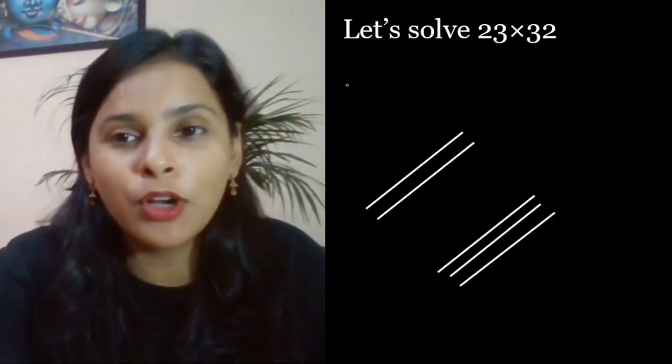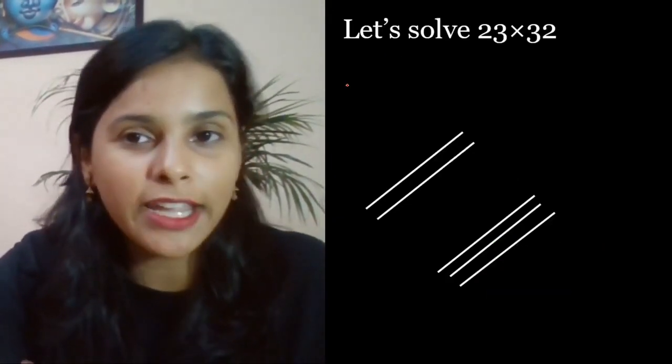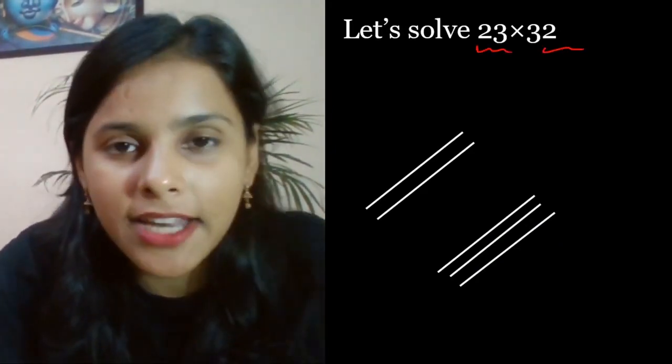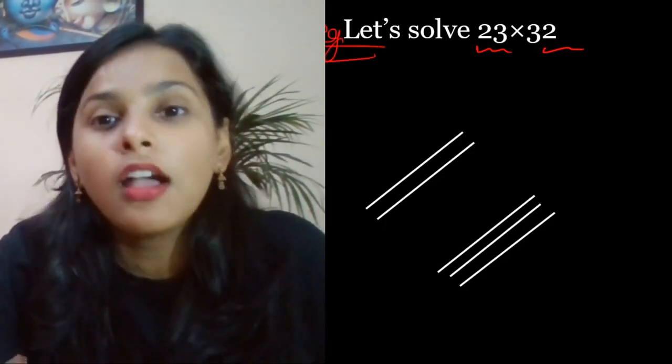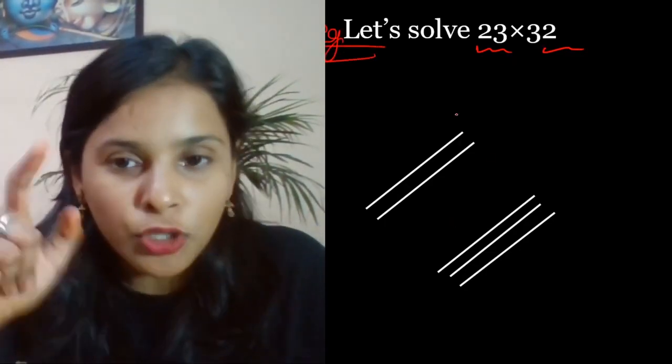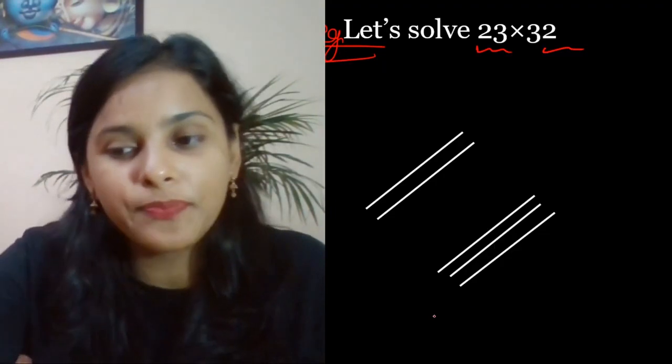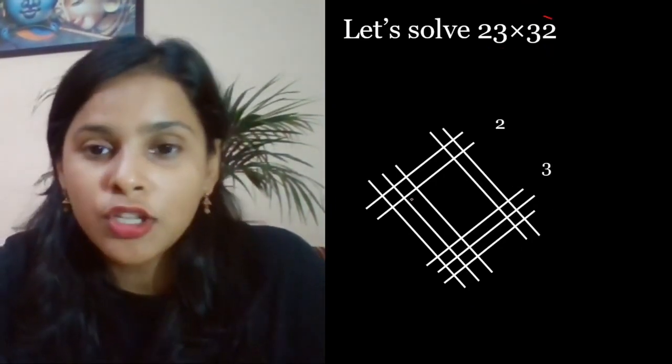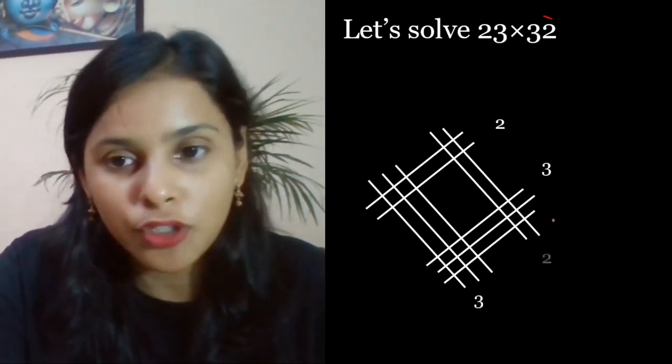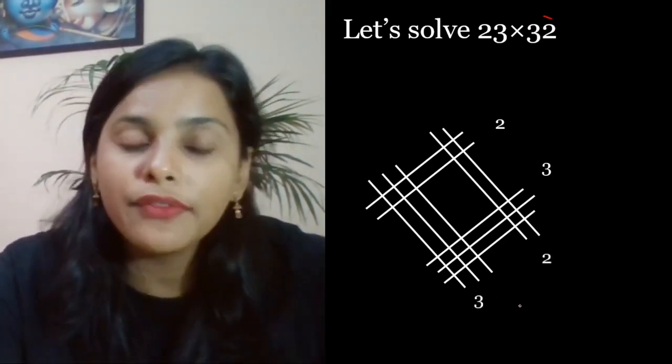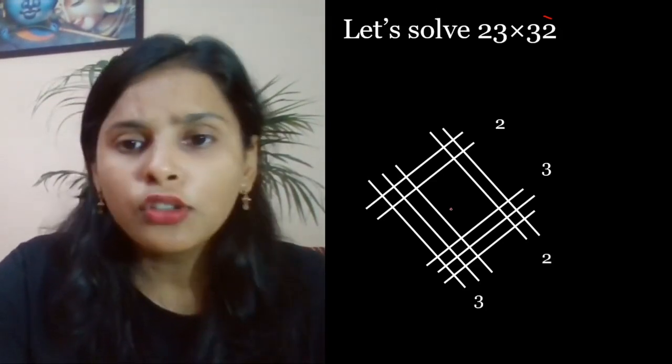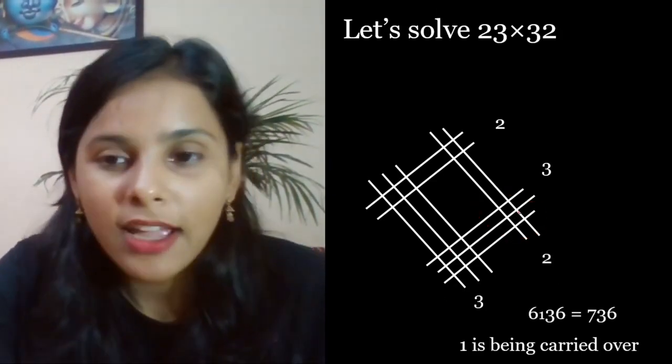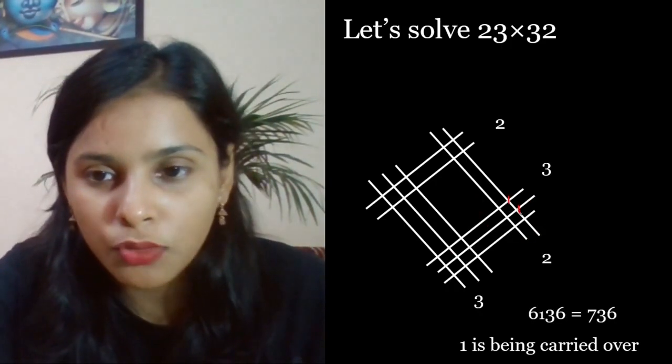One more example, 23 into 32. How to do this? 2, 3 is the digit, so 2 lines, 3 lines done. Then we have 3 and 2, so 3 lines and 2 lines. Count how much happened here: 1, 2, 3, 4, 5, 6.